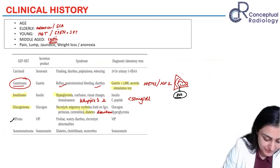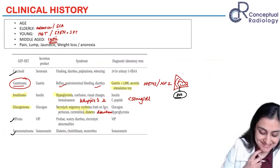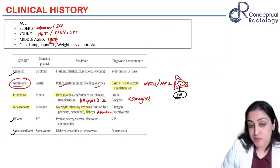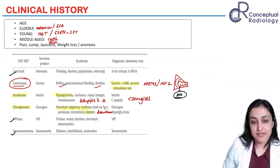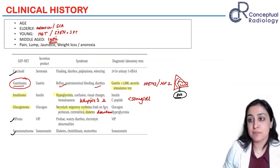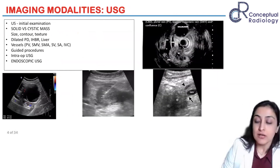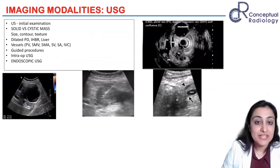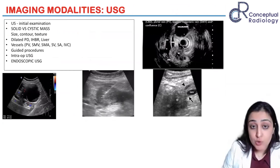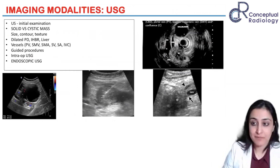The rarer neuroendocrine tumors predominantly present with diarrhea. So that's about neuroendocrine tumors. Now, whenever you get a long question on any pancreatic mass, we'll first talk about the imaging modality.